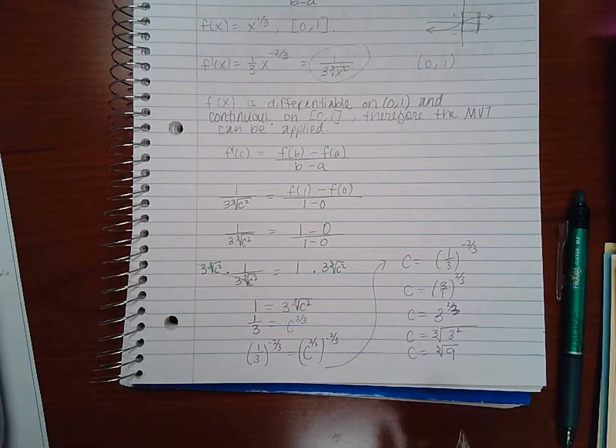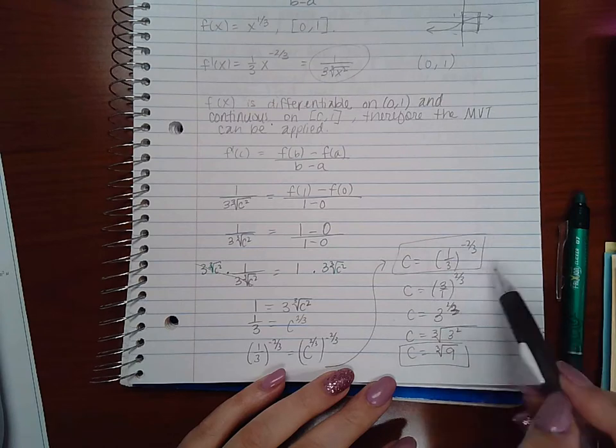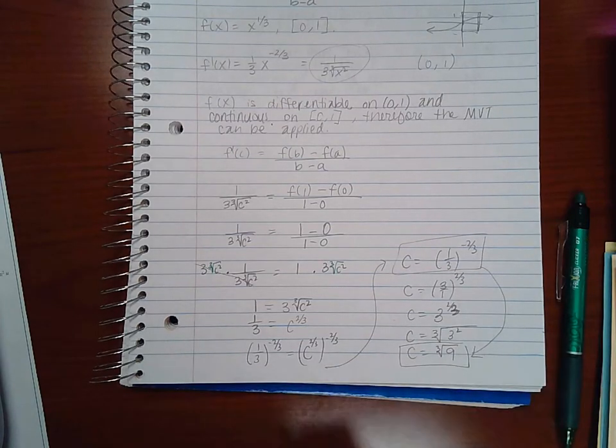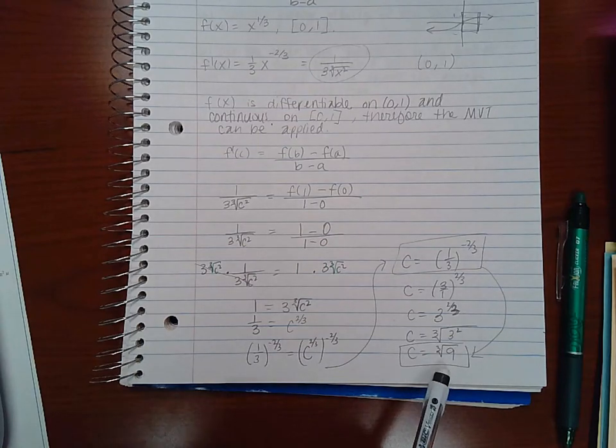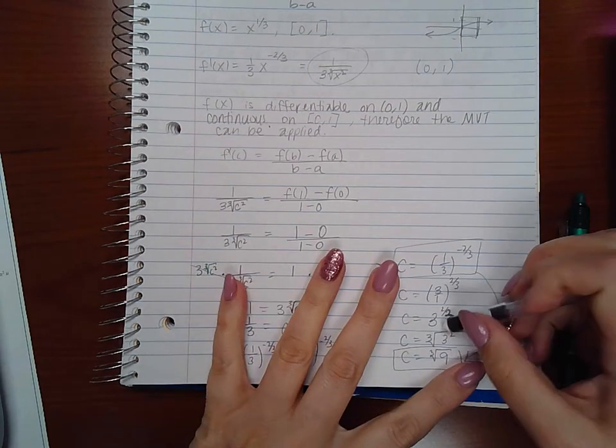So the c value that they are asking me to find is this. Now I could have just typed this in the calculator and it would have given me the cube root of 9 or a decimal. So if they do want the exact answer, you do need to know your exponent rules in order to get there.